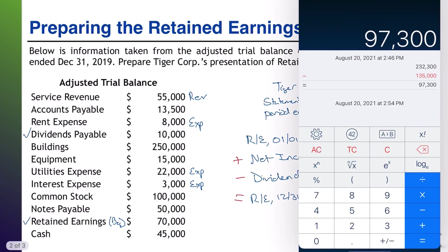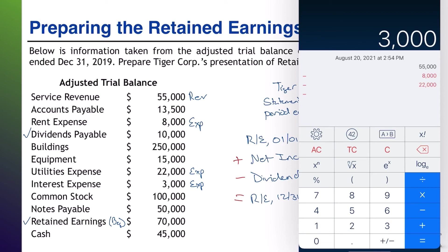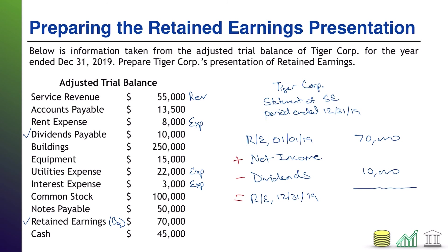We've got $55,000 in revenue, minus $8,000 in expenses, minus $22,000 in expenses, minus another $3,000 in expenses. That gives us net income of $22,000, which I will now enter into our statement. So to recap: add the revenue, subtract the expenses — that's how we came up with our $22,000 net income.